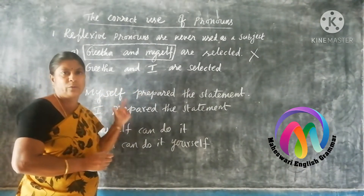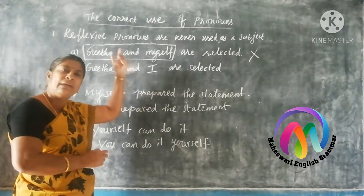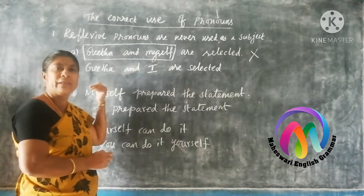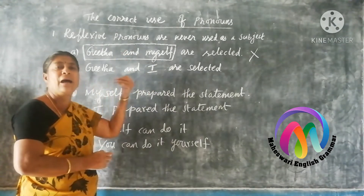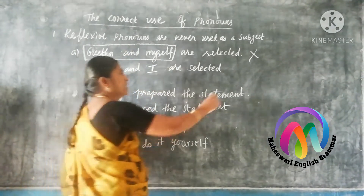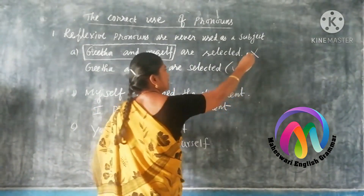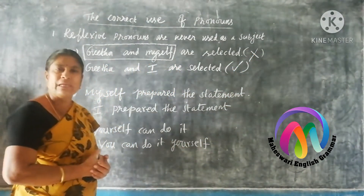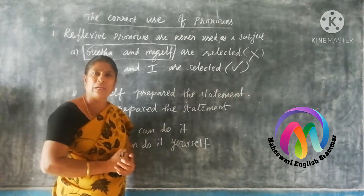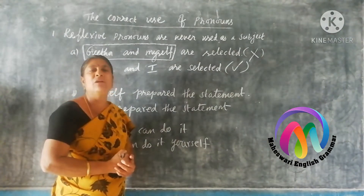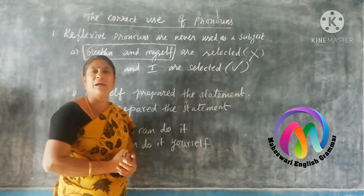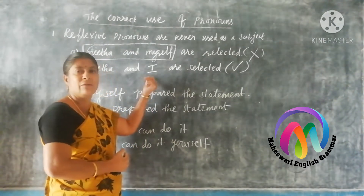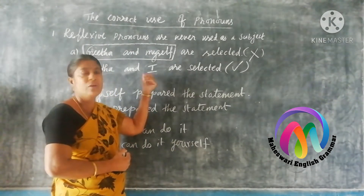The correct usage is 'Geetha and I are selected.' 'I' is a pronoun, but 'myself' is a reflective pronoun. You cannot use 'myself' here because the word 'I' is a pronoun, whereas 'myself' is a reflective pronoun and it is never used as a subject.